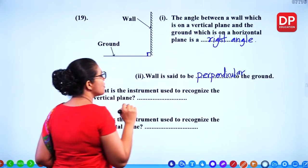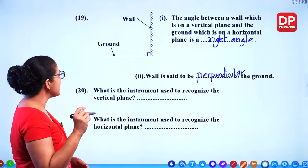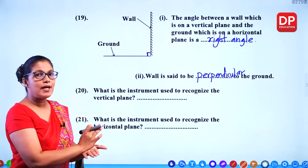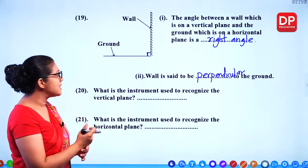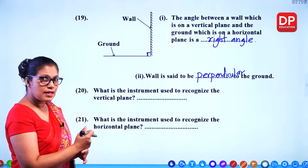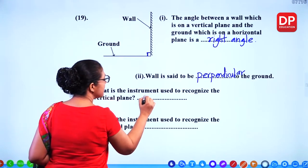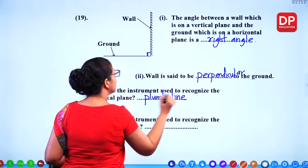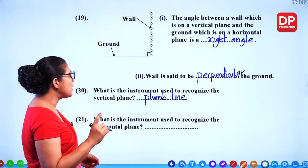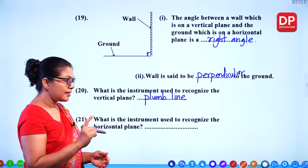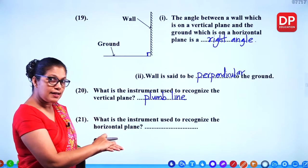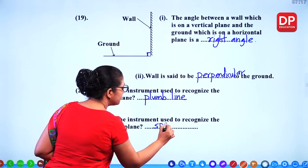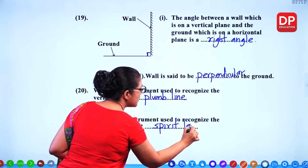The wall is perpendicular to the ground. The instrument used to recognize the vertical plane is the plumb line — masons use it to check whether walls are vertical. The instrument used to recognize the horizontal plane is the spirit level — masons use it to check whether surfaces are level.